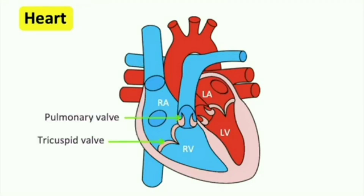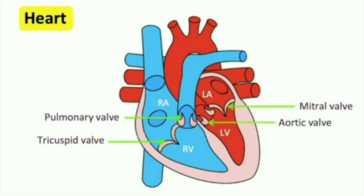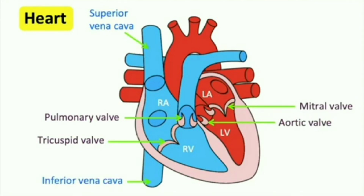The pulmonary and aortic valves are on the right. The mitral and aortic valves are on the left. The superior and inferior vena cava. The pulmonary vein carries oxygenated blood from the lungs to the heart.